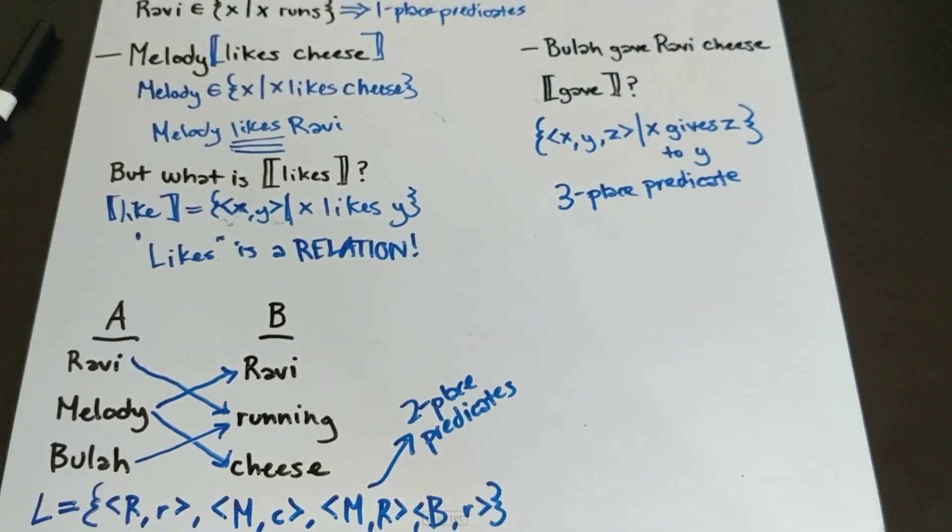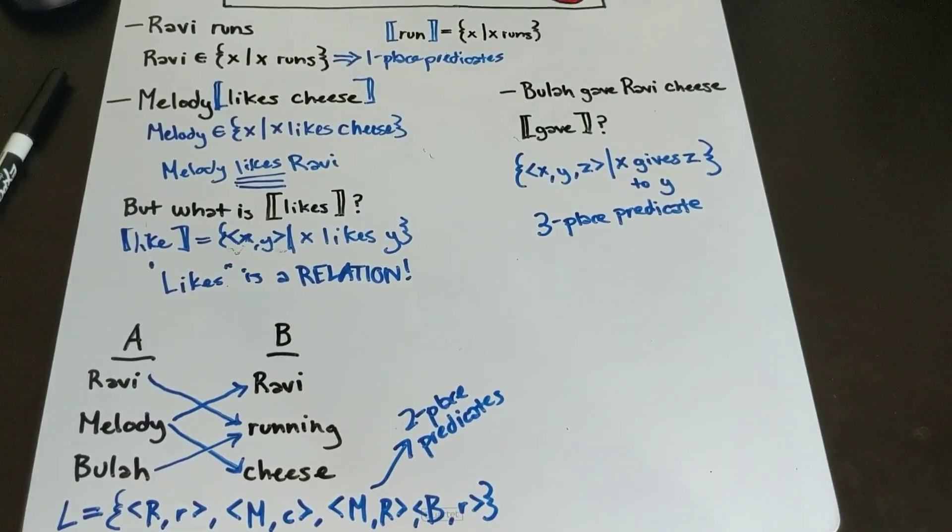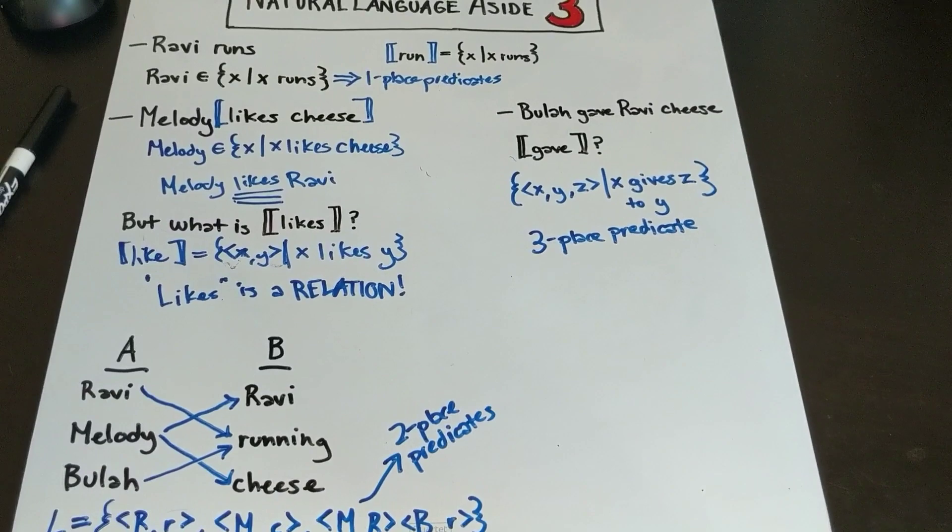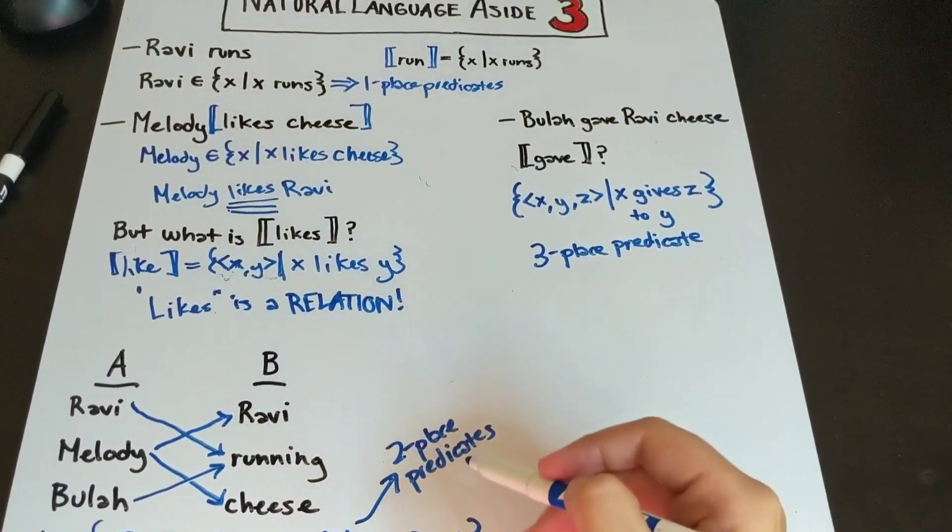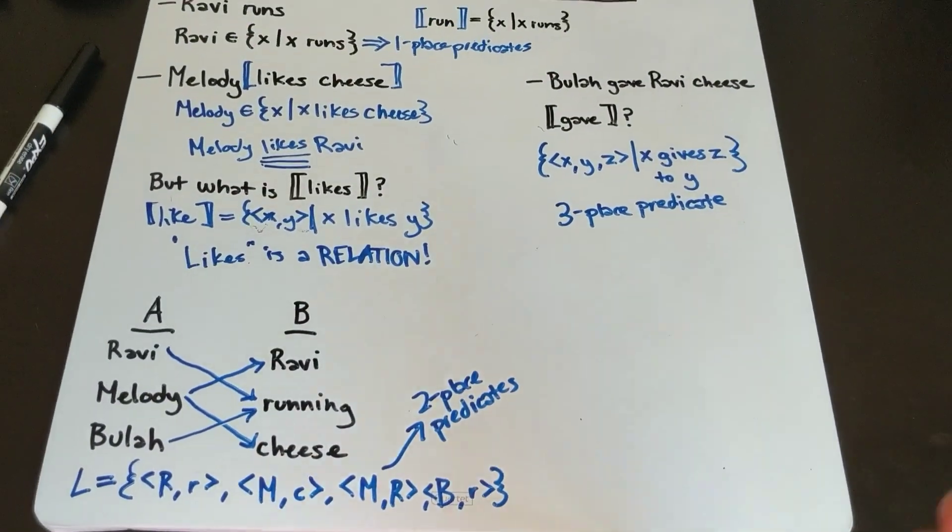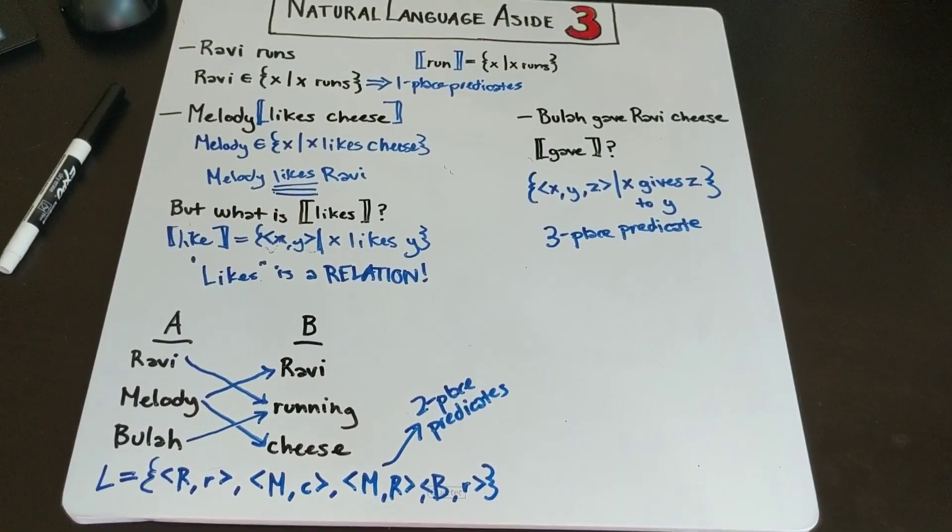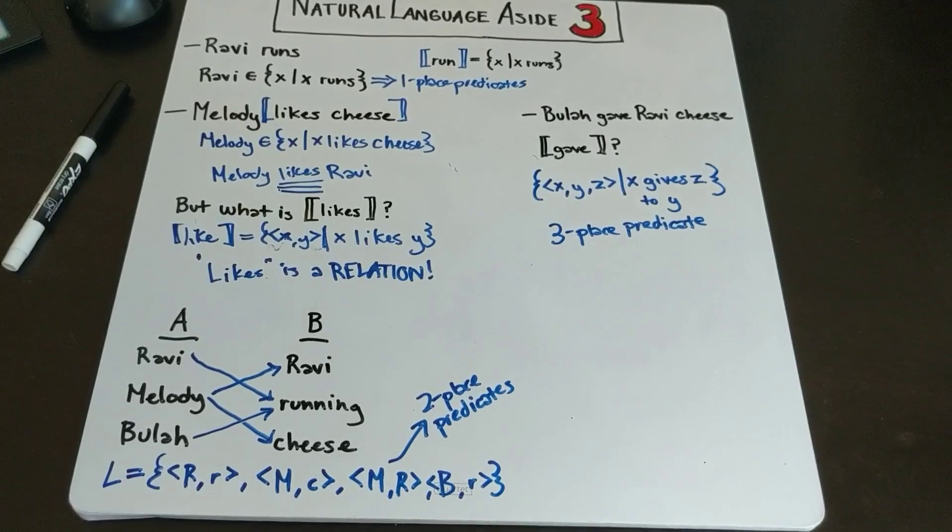Having this sort of language allows us to look at verbs as being parts of three different categories, and we can fit them into these categories based on how they combine with other things in the sentence. This has been our first natural language aside. Stay tuned for more of these to follow.